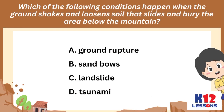Choose the correct answer. Which of the following conditions happen when the ground shakes and loosens soil that slides and buries the area below the mountain? A. Ground rupture, B. Sand bows, C. Landslide, D. Tsunami.